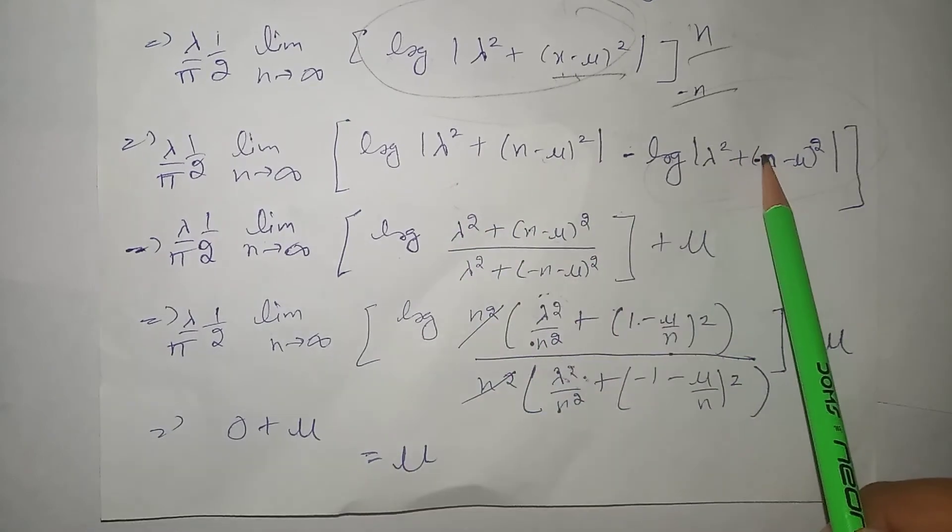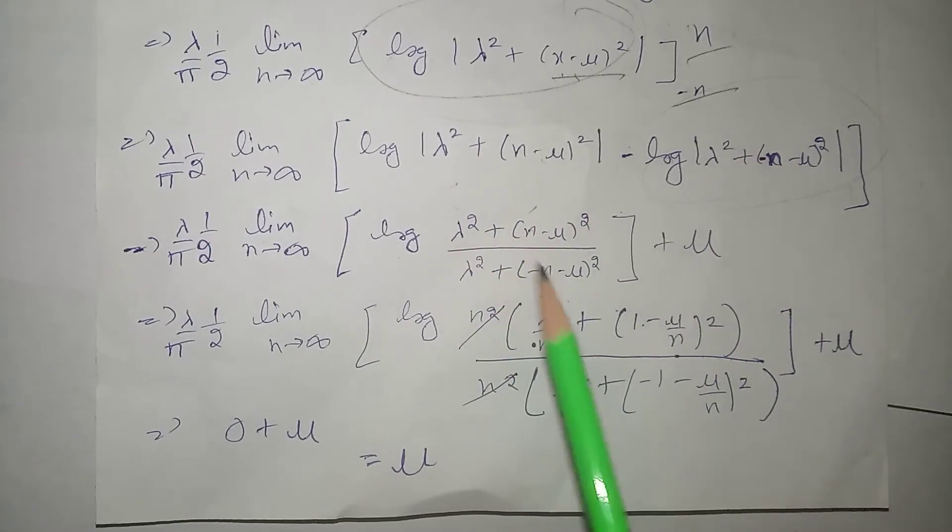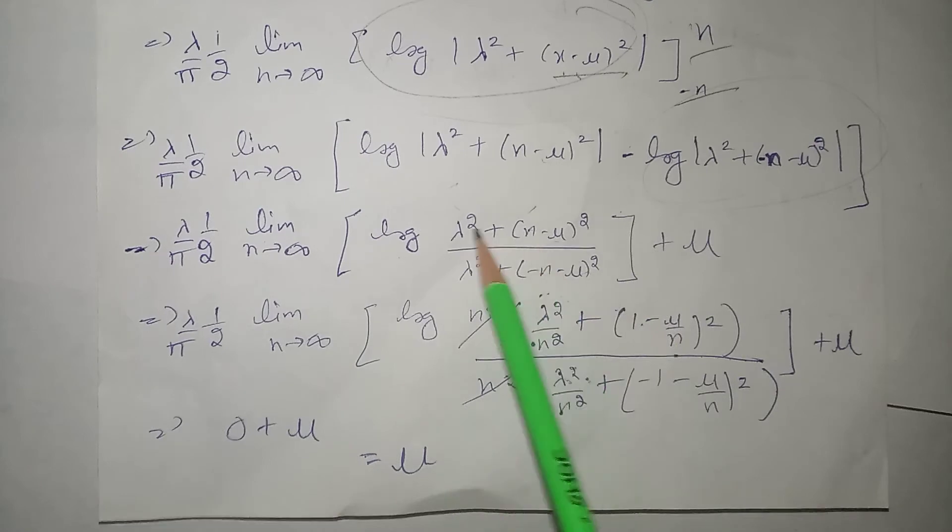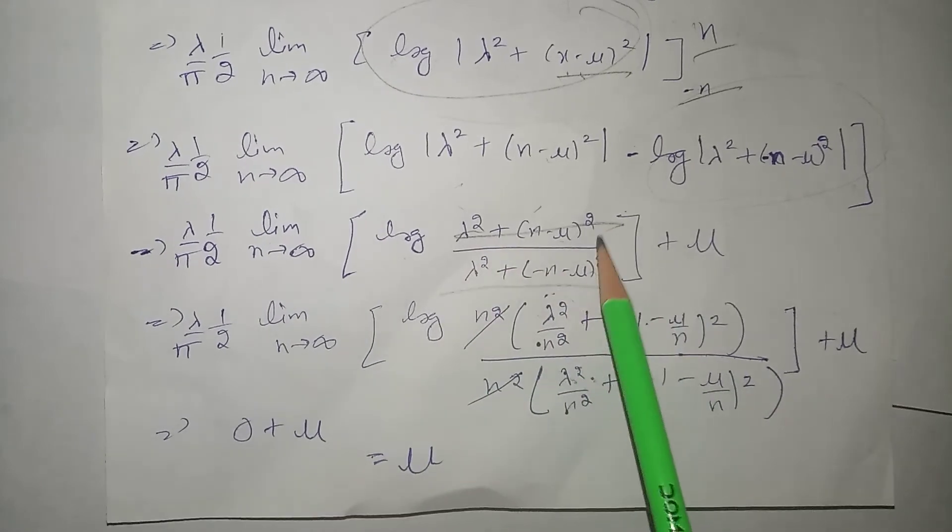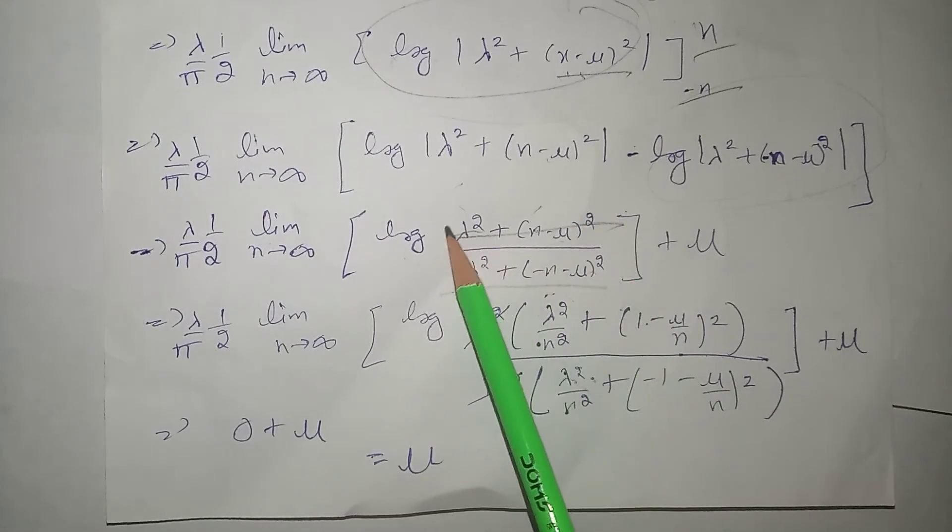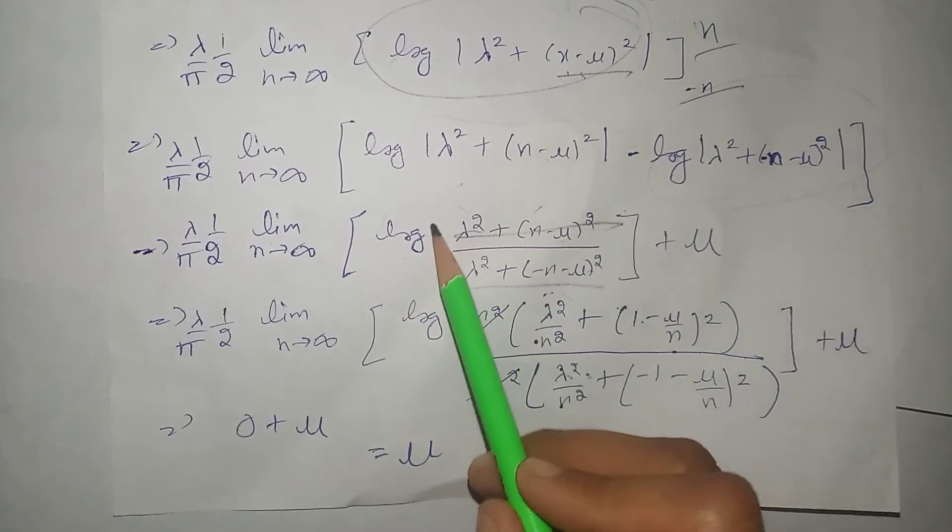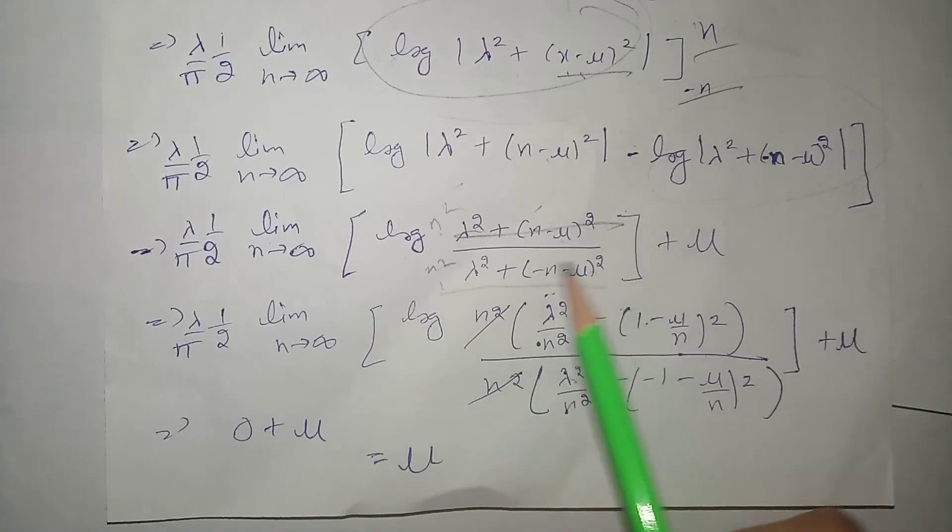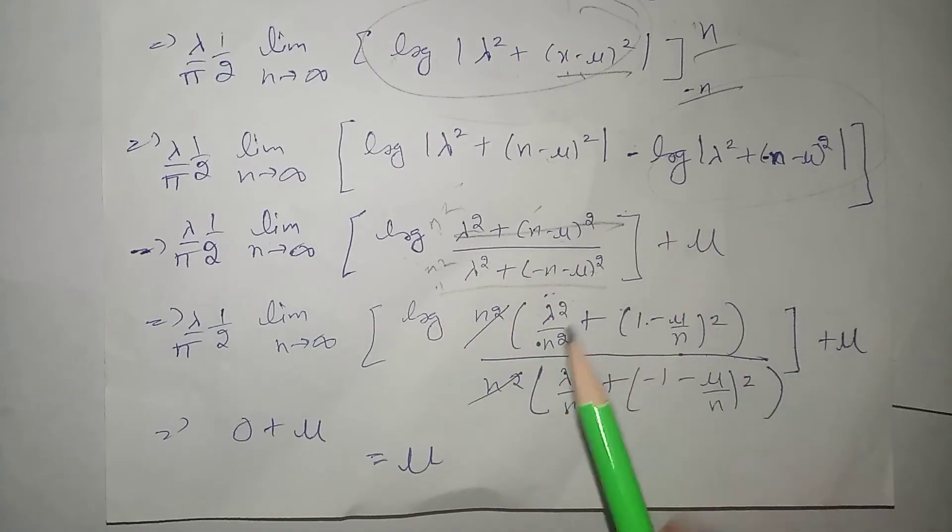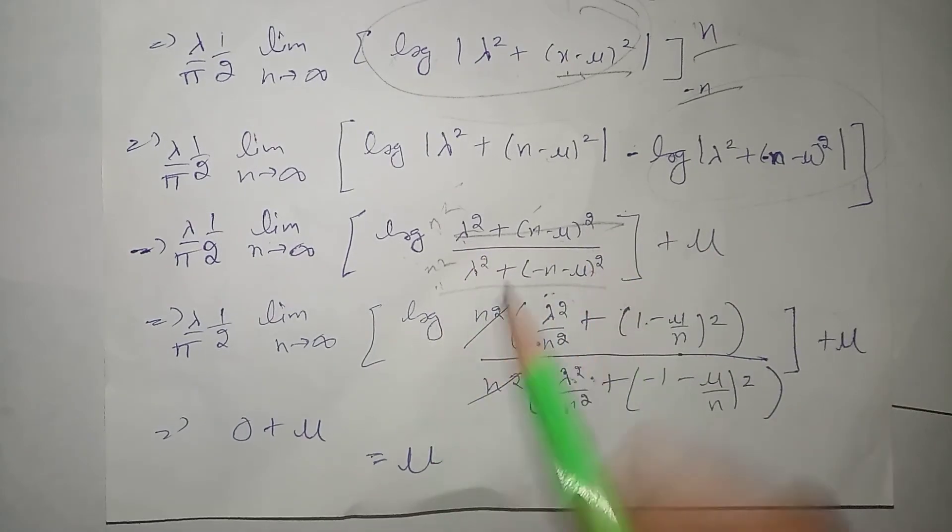Next, log m minus log n is obviously equals to log m divided by n. Is term aur is term se. Toh, aap aise bhi bol sakti hai ki. Humne n square common nikaal liya. Dono terms mein se. Further, aap aise bhi bol sakti hai ki n square ko humne uppar multiply kar diya. Niche bhi multiply kar diya.